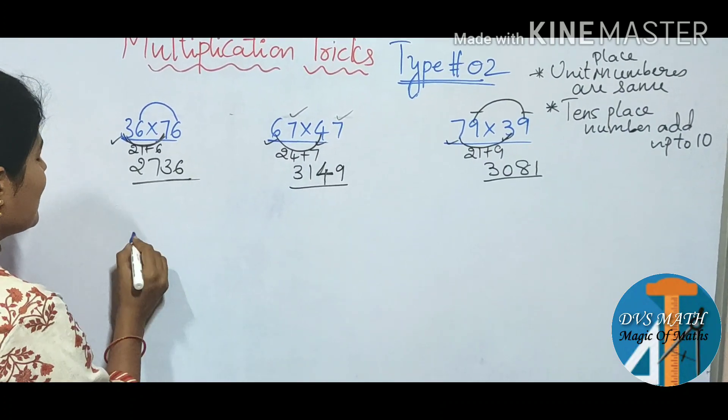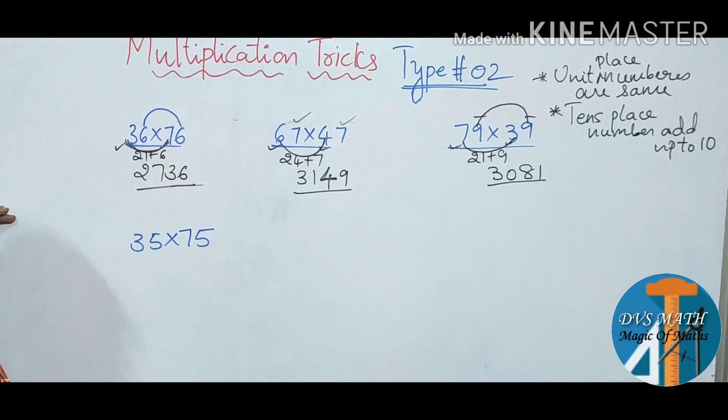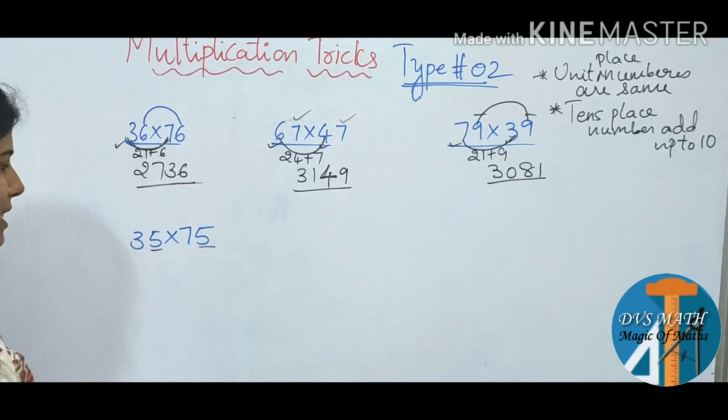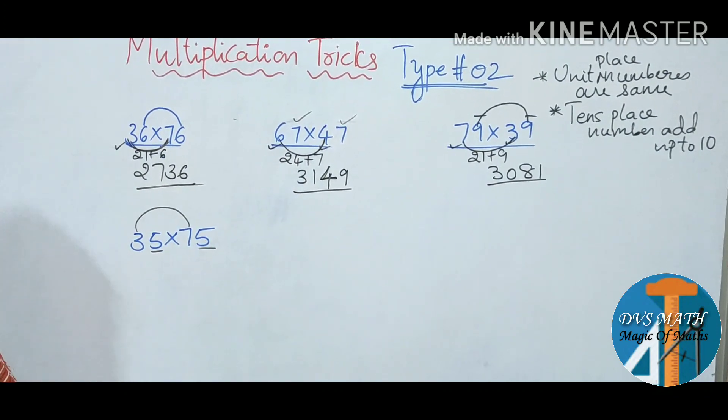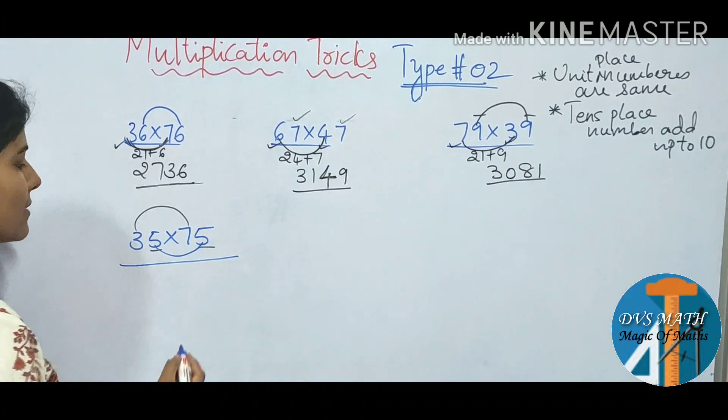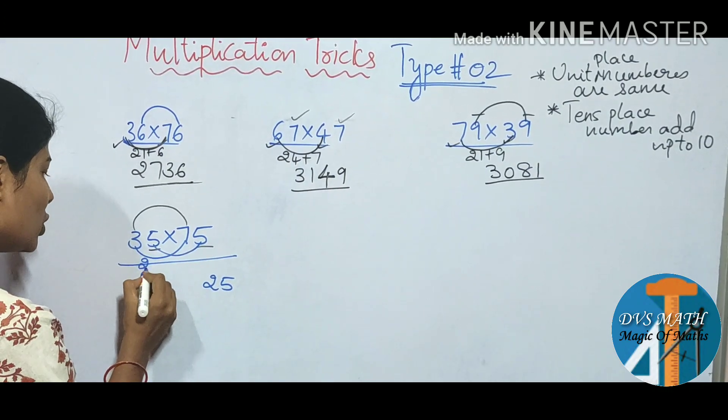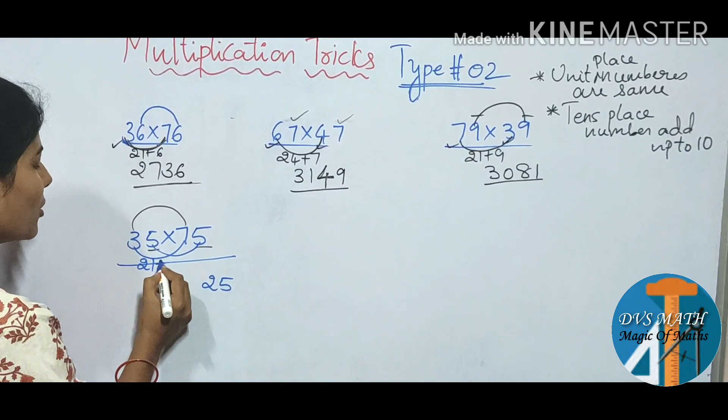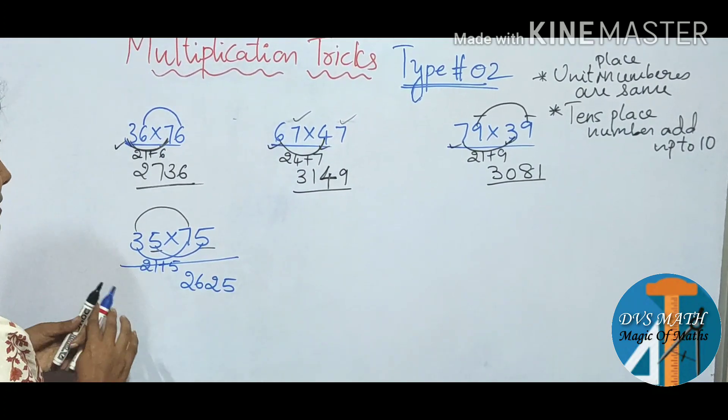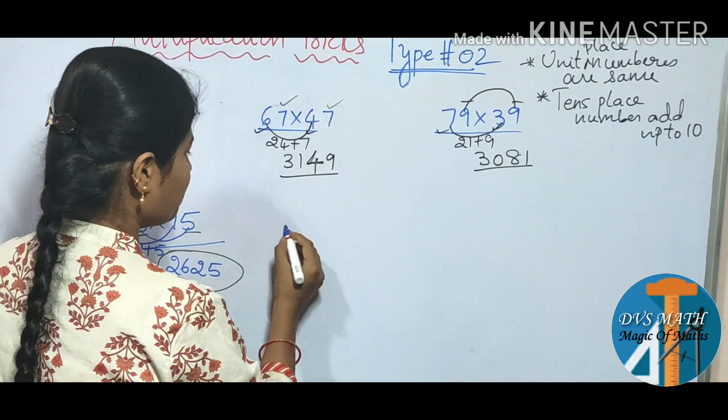35 into 75. So the last digit same. 10th place then I multiply the 10. I'll apply. 5 5s are 25. 3 7s are 21 plus same number add. 21 plus 5, 26 is the answer, 2625.